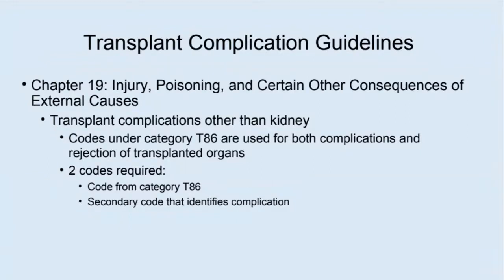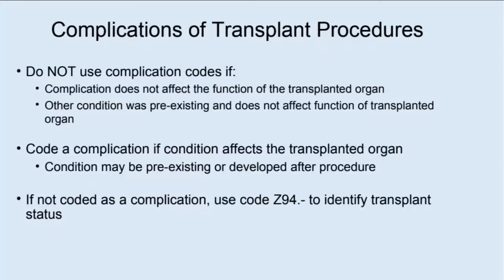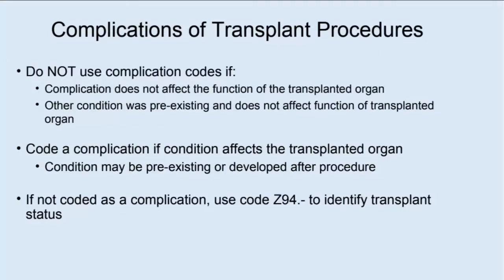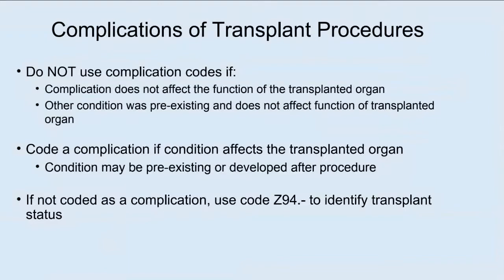The second code is more specific and identifies the complication. The guidelines state that you do not use a complication code if the complication does not affect the function of the transplanted organ, or if another condition was preexisting and doesn't affect the function of the transplanted organ. It's not a complication unless it's affecting how the transplanted organ is functioning. You do use a complication code — that T86 — if the complication affects the transplanted organ. If it's not coded as a complication, use code Z94 to identify transplantation status.